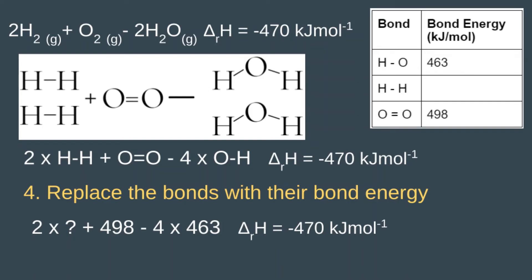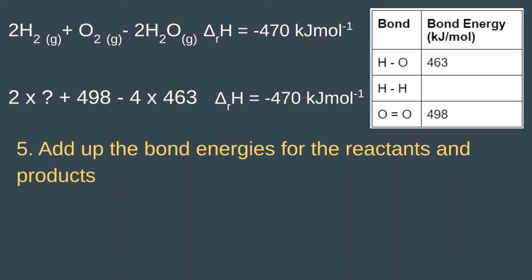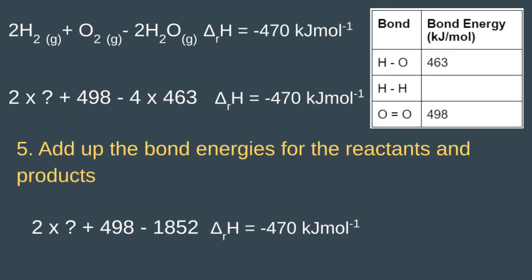And that is going to equal negative 470 kilojoules per mole. Just like last time, we're going to add up the bond energies for the reactants and the products, but this time we're going to have a question mark where our two times H-H bond is. We keep the two times there, though.